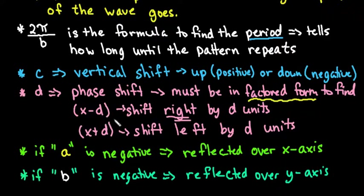D is always our phase shift and it has to be in factored form like I demonstrated to you. And if it's (x - d), it's always going to shift right by d units. And if it's (x + d), it's always going to be shifting left by d units.